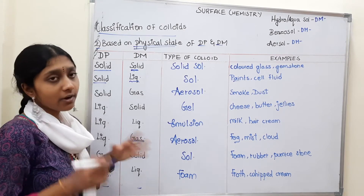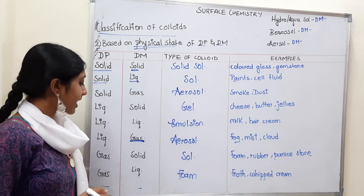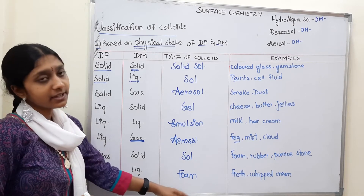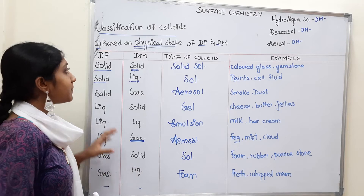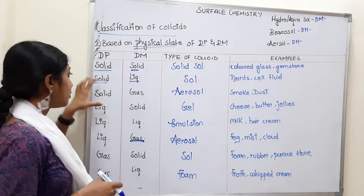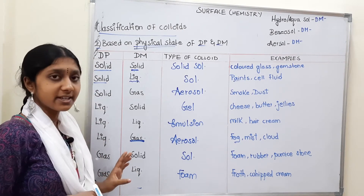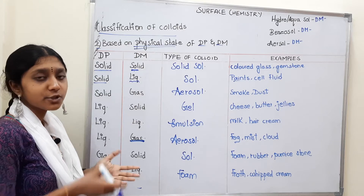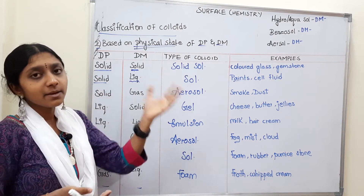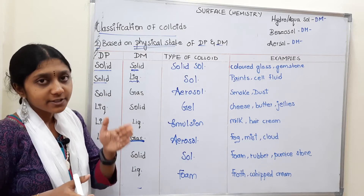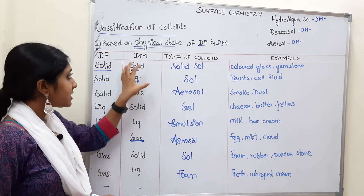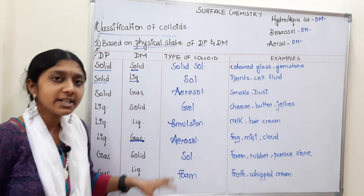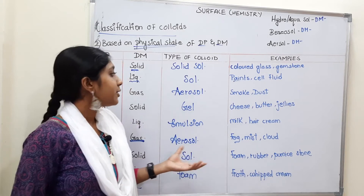Gas and gas is not a colloid. In the disperse phase column, there are 3 solid, 3 liquid, and 2 gas entries. The dispersion medium goes through solid, liquid, and gas for each. If you practice this table, it becomes easier to remember.